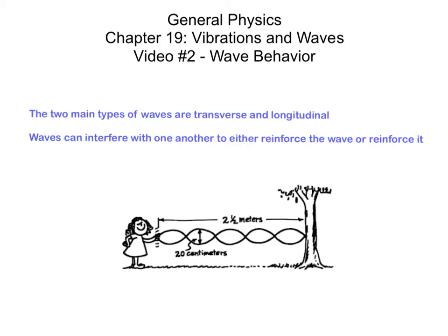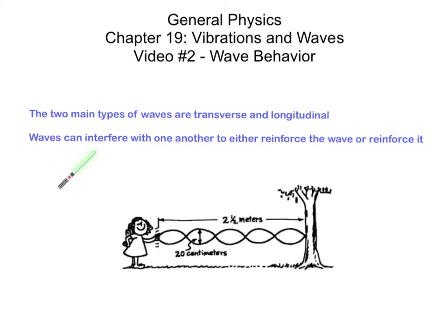Here we are with video two of chapter 19. This video is called Wave Behavior. In it, we're going to talk about the two main types of waves — transverse and longitudinal — and we're going to talk about wave interference and what happens when one or more waves come into contact with one another.